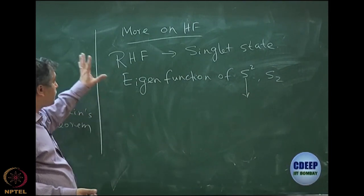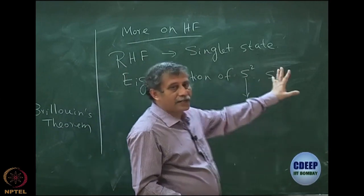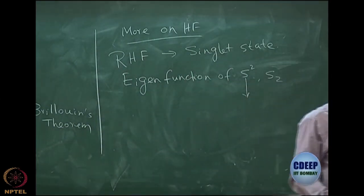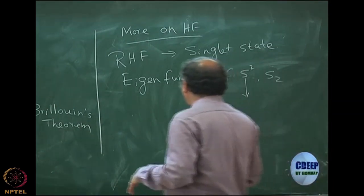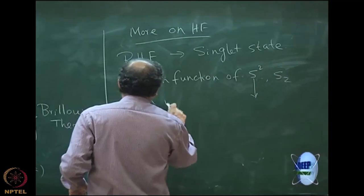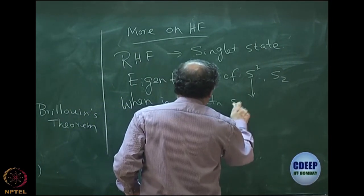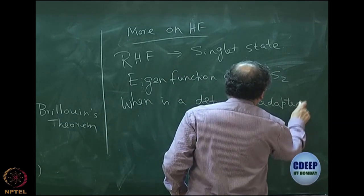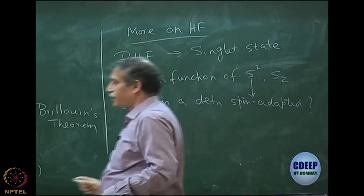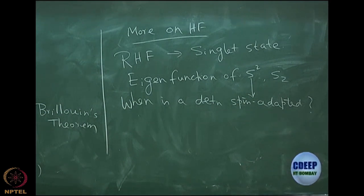A spin-adapted determinant or state is an eigenfunction of S-squared and one of the S operators - conveniently the S-z operator. When is a determinant spin-adapted? When is it an eigenfunction of S-squared and S-z? The proof is very elaborate, but the result is very important.